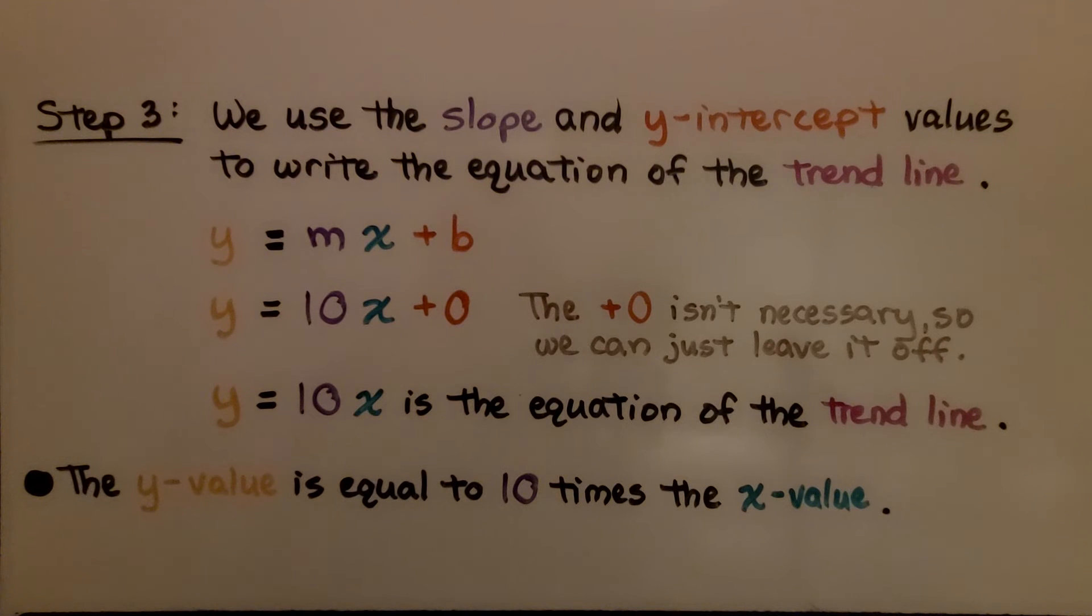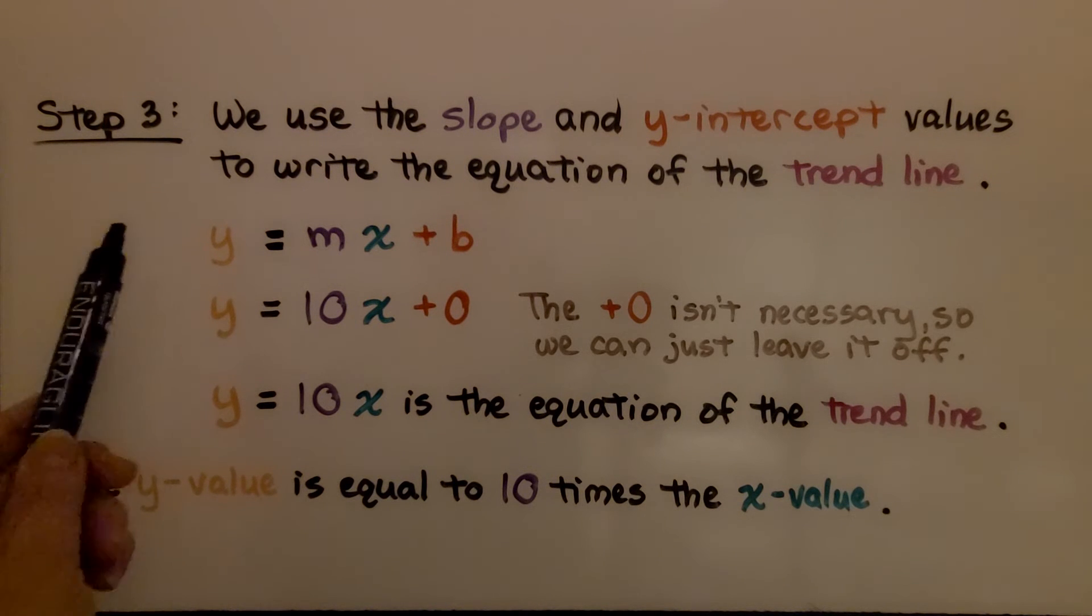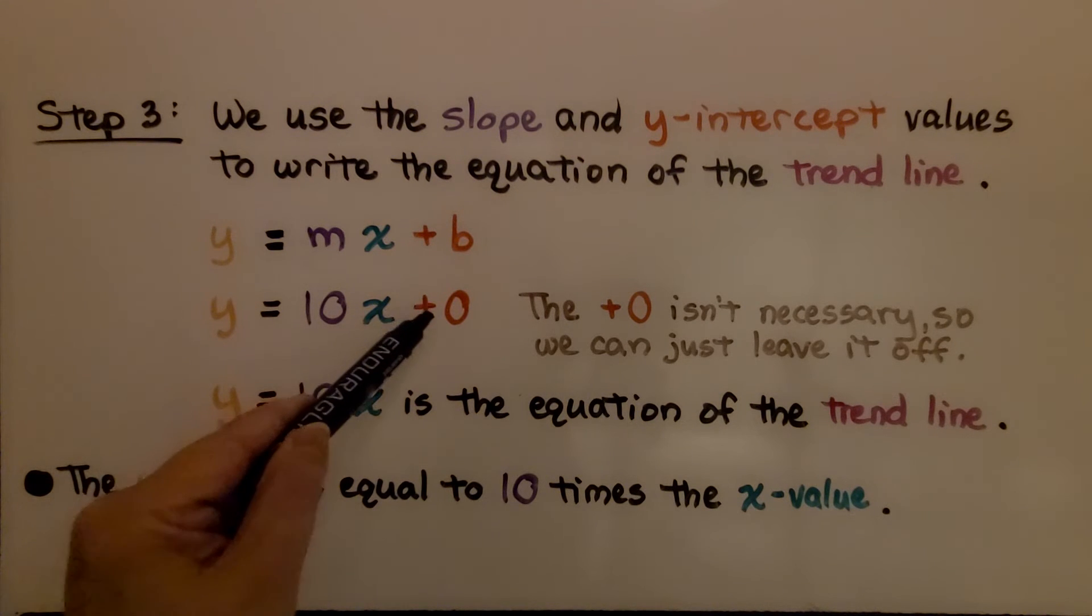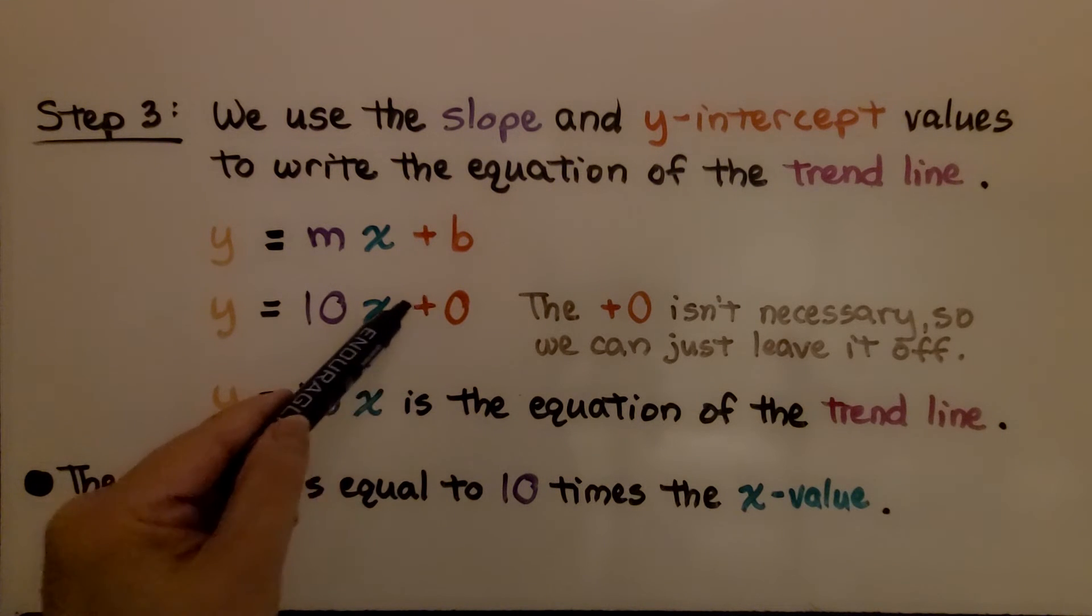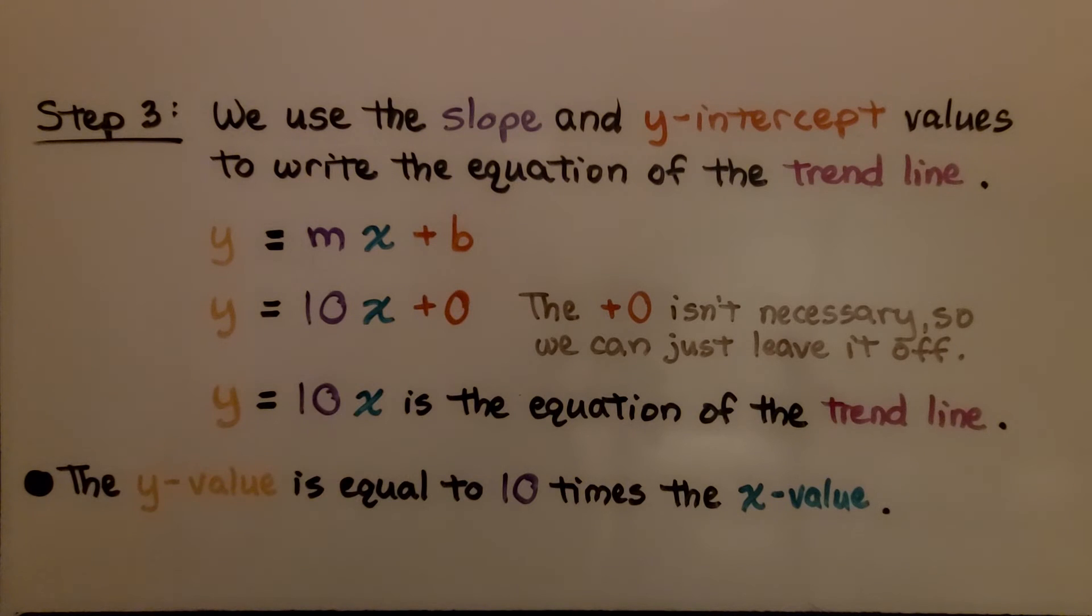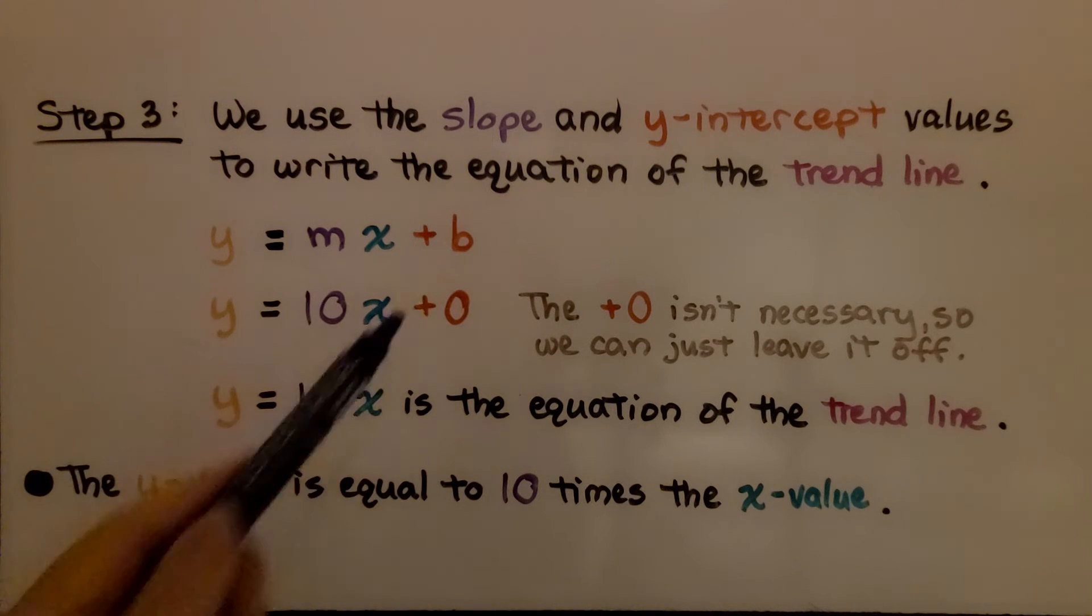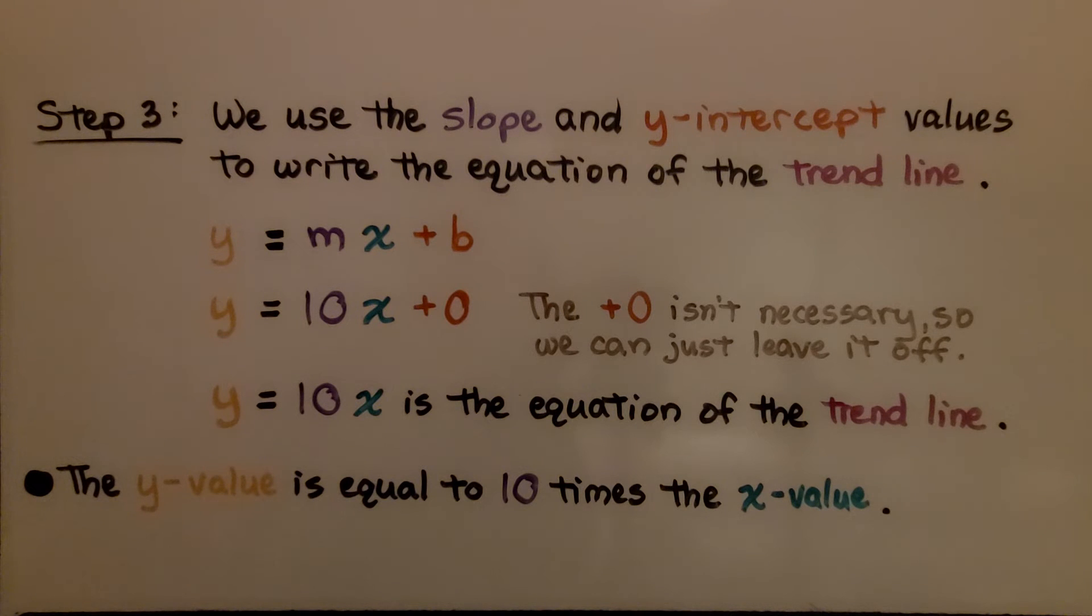For step 3, we use the slope and the y-intercept values to write the equation of the trendline. We know that the slope was 10. We know the y-intercept b, that was 0. Well, this plus 0 isn't necessary. It's not going to affect the equation, just adding 0. So we can just leave it off, and y is equal to 10x is the equation of the trendline. The y value is equal to 10 times the x value.